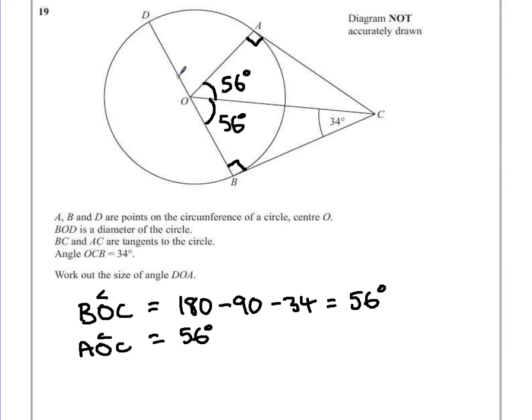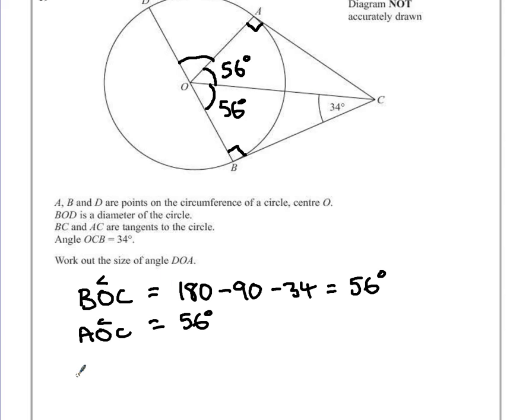So now to work out the angle that we were after, DOA, we have a straight line. Because a diameter is a straight line that goes through the middle of a circle, we know a diameter and a straight line add up to 180 degrees.